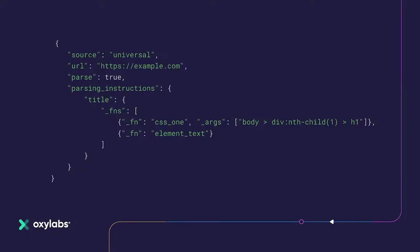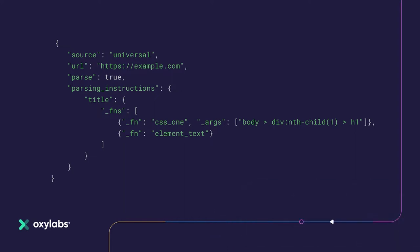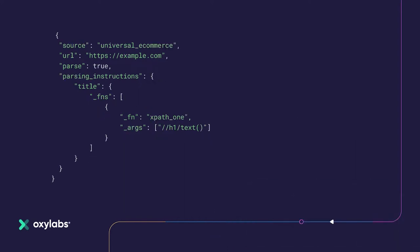Using CSS, an example would look like this. As CSS doesn't have a similar function to XPath, you'll have to string two functions together. The first will select the h1 element, while the second will extract its text. More complex examples of using CSS will be in our documentation, which you can find in the description below. With XPath, you can conveniently use the text function, which extracts the text value of the selected node.